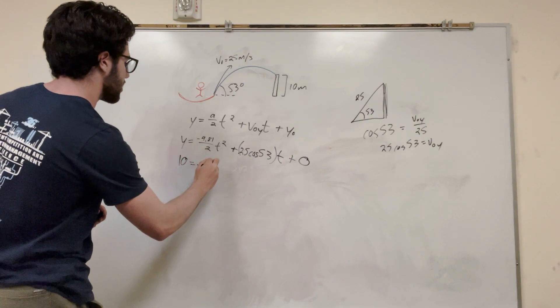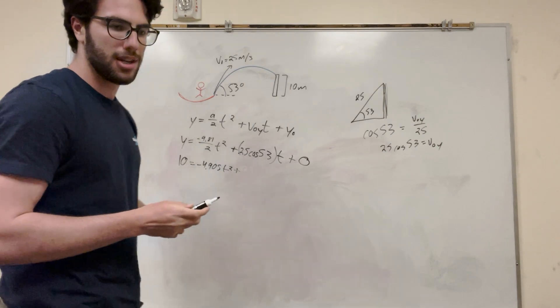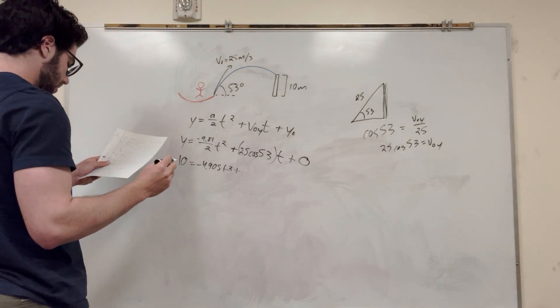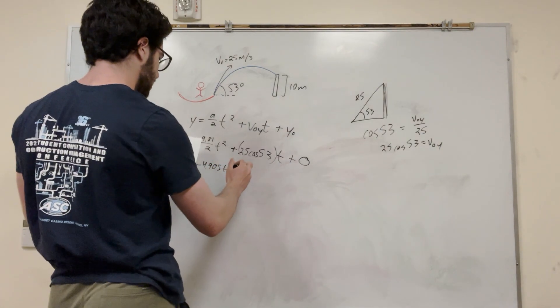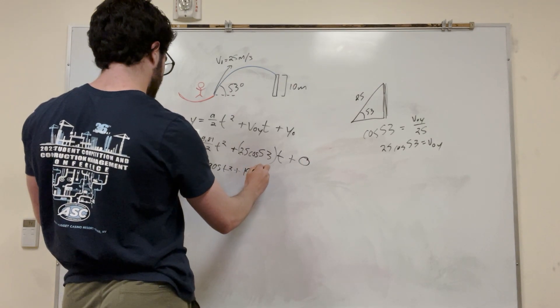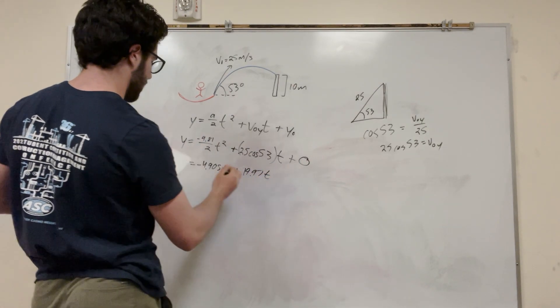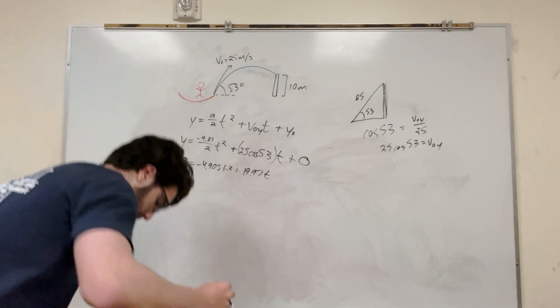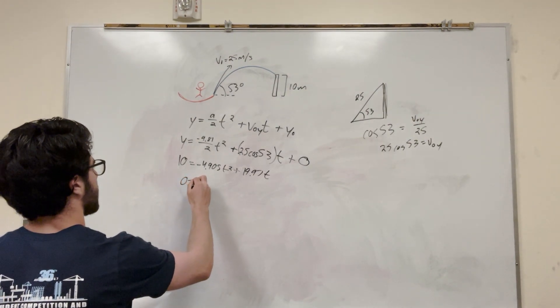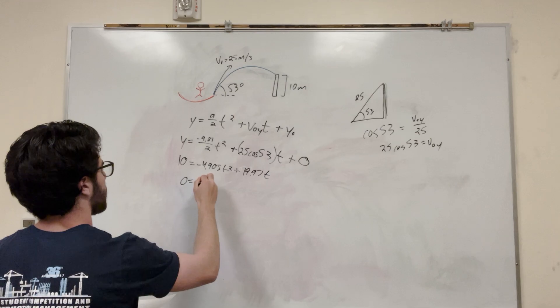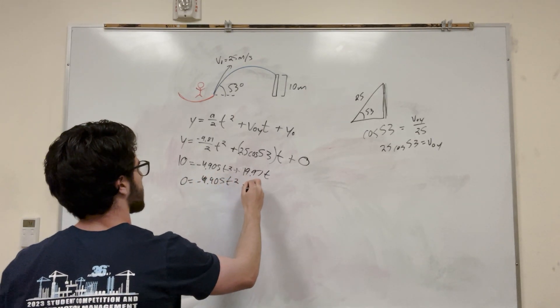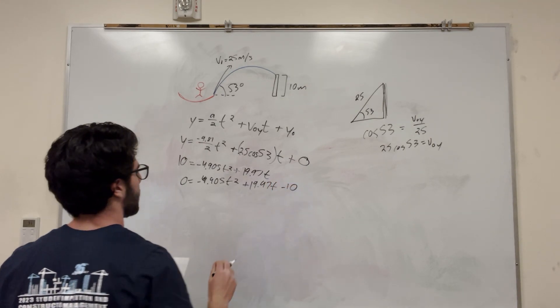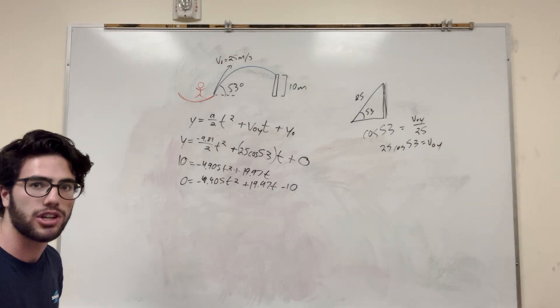So we can say 10 is equal to, this is going to be negative 4.905 t squared, and then, I don't know, what's this number going to be? That's going to be 19.97, I think, t, and then what we want to do now is we want to move this 10 over to the other side, so it can use a quadratic equation, right? So let's do that. So it's going to be 0 is equal to negative 4.905 t squared plus 19.97 t, minus 10.